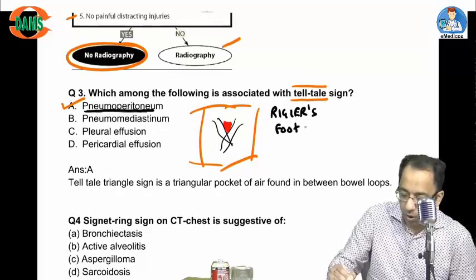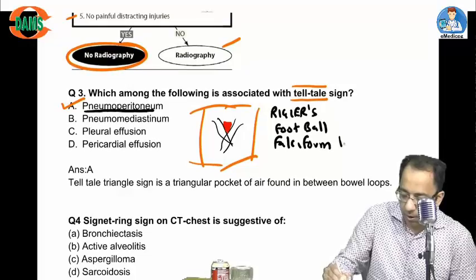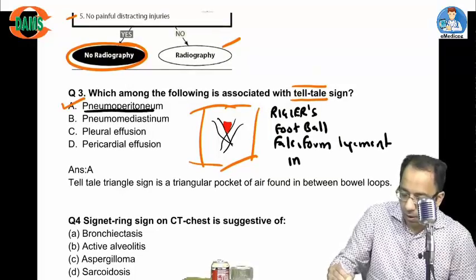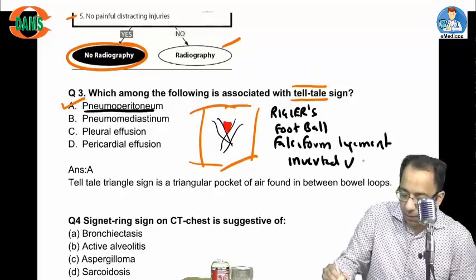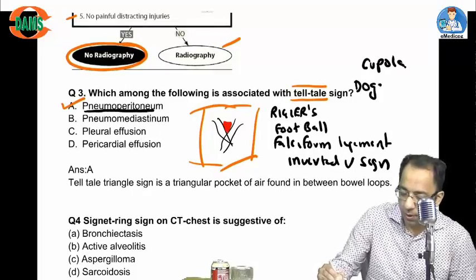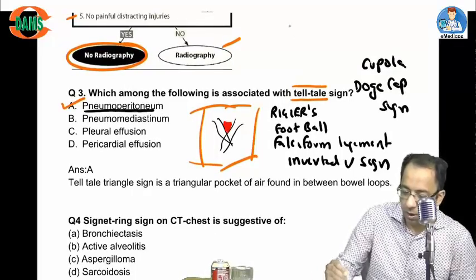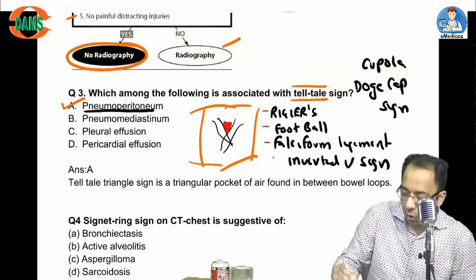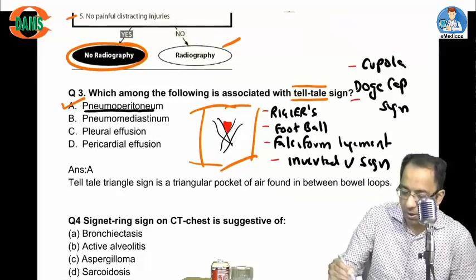Additional named signs of pneumoperitoneum include: falciform ligament sign, inverted V sign, cupola sign, and doge cap sign. These are all named signs of pneumoperitoneum that can be asked as one-liners in exams.